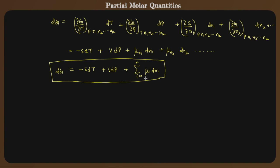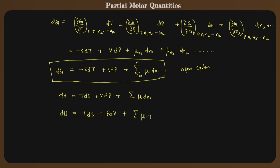Other thermodynamic functions for the open system are written similarly. dH = TdS + VdP + Σμi·dNi. Internal energy: dU = TdS − PdV + Σμi·dNi. Work function: dA = −PdV − SdT + Σμi·dNi. All these equations are valid for the open system.